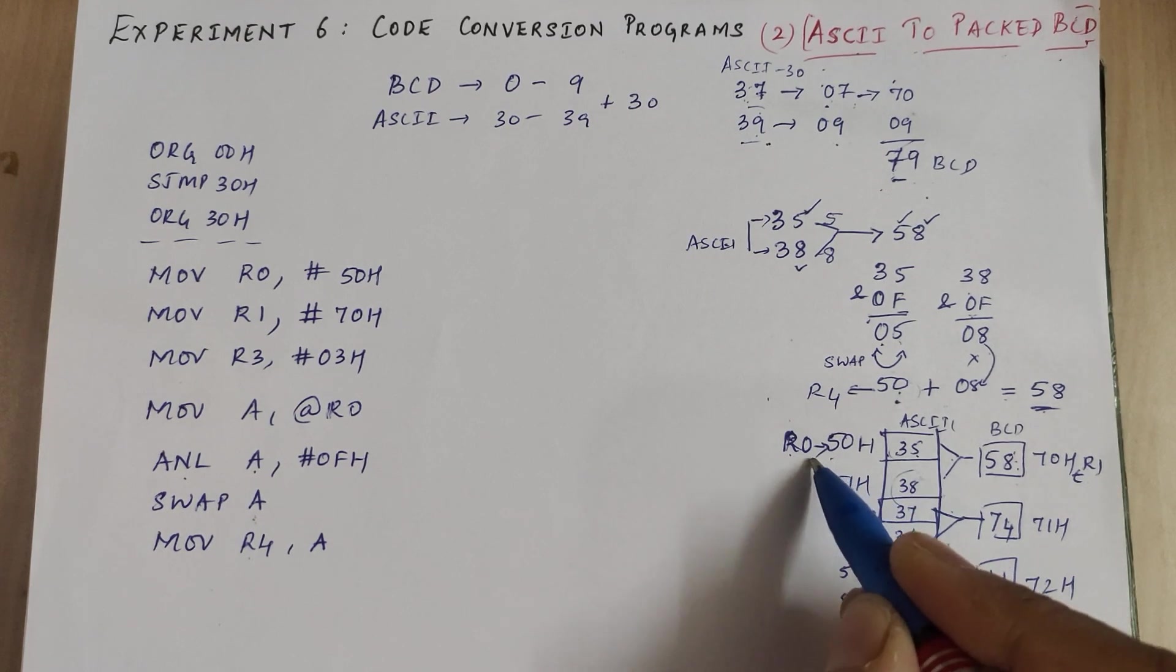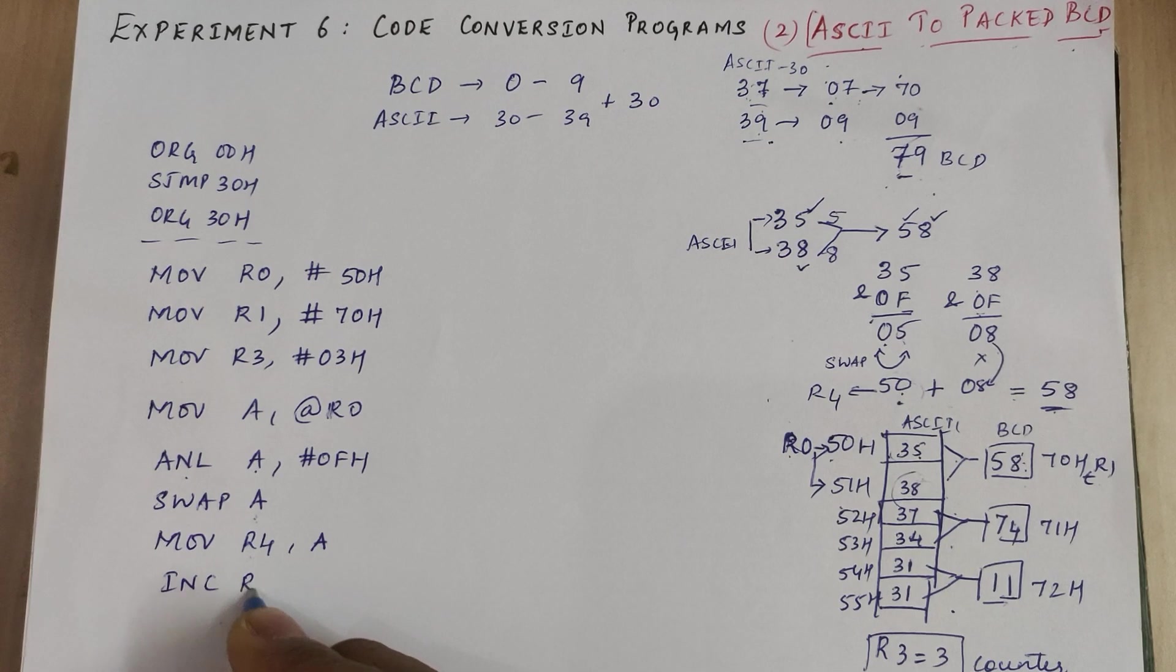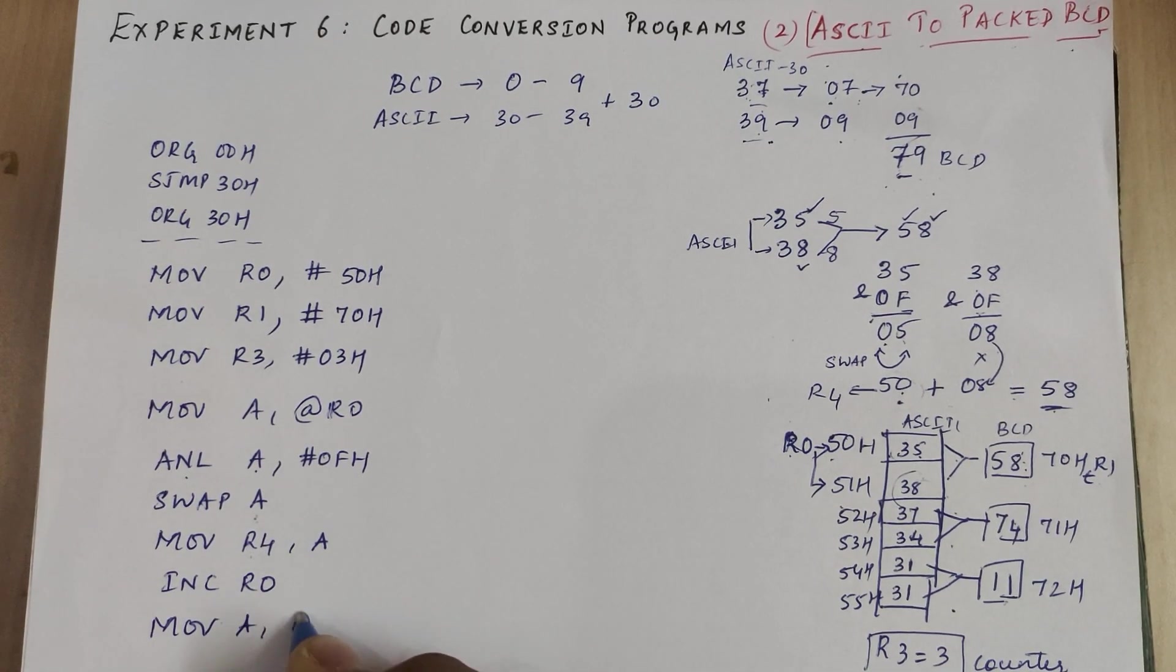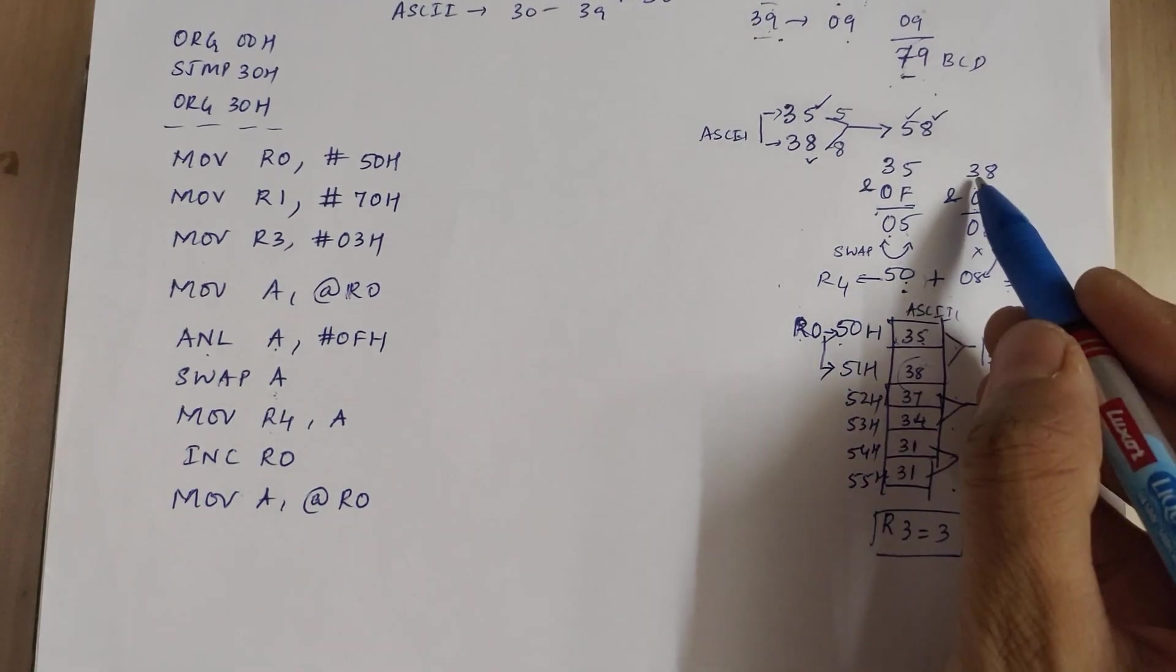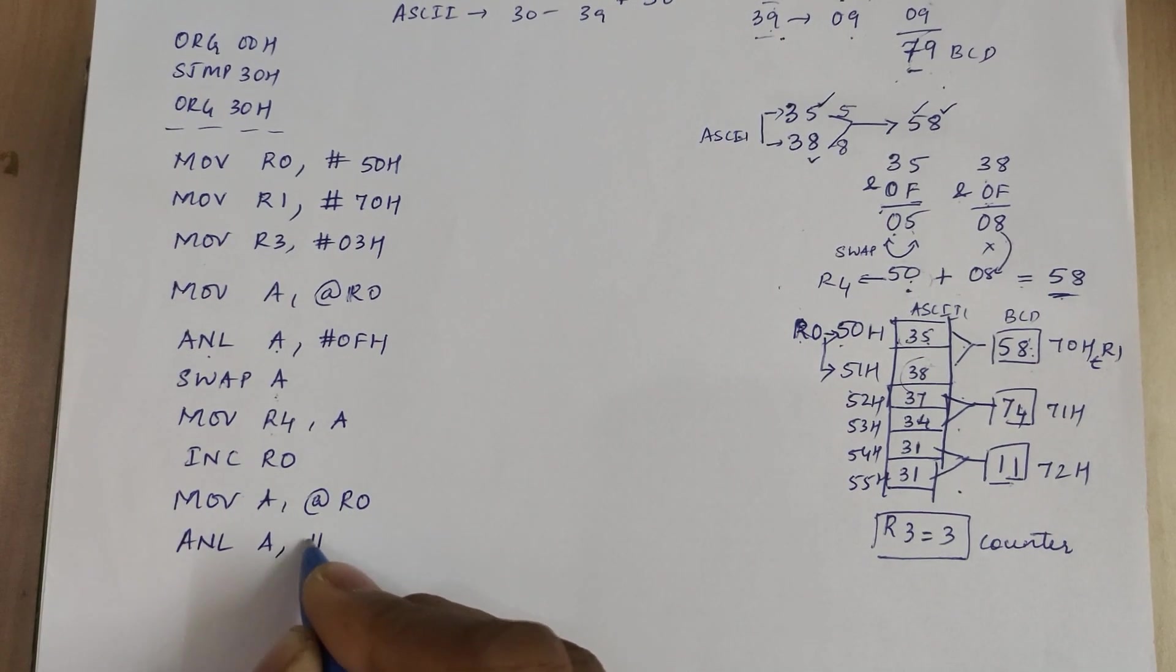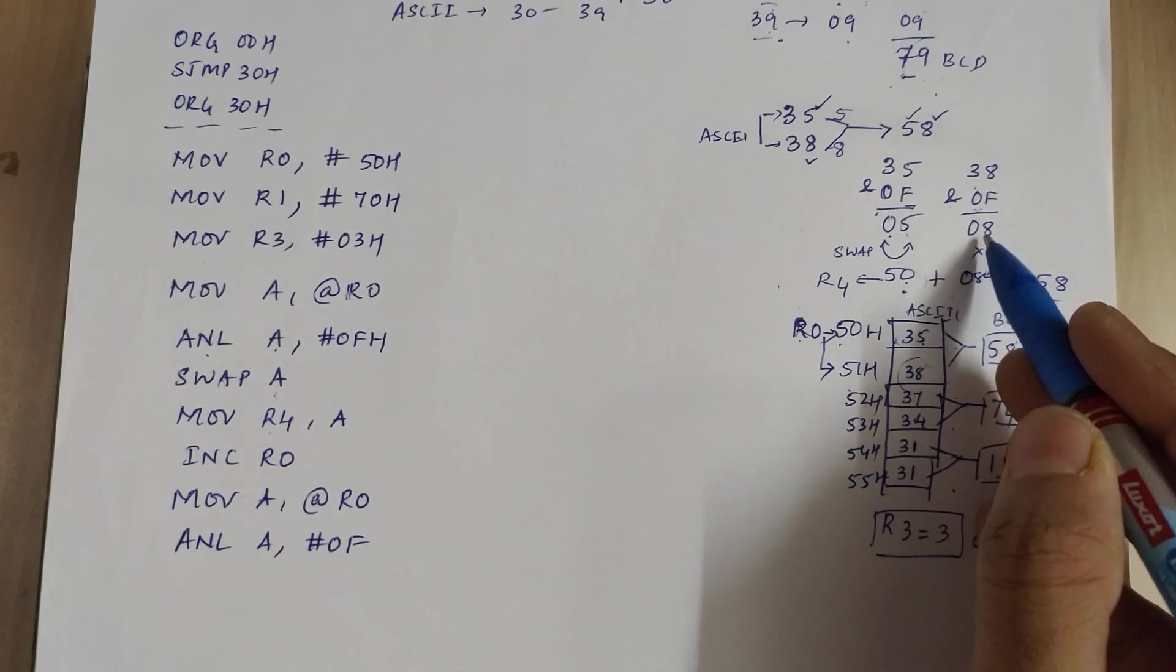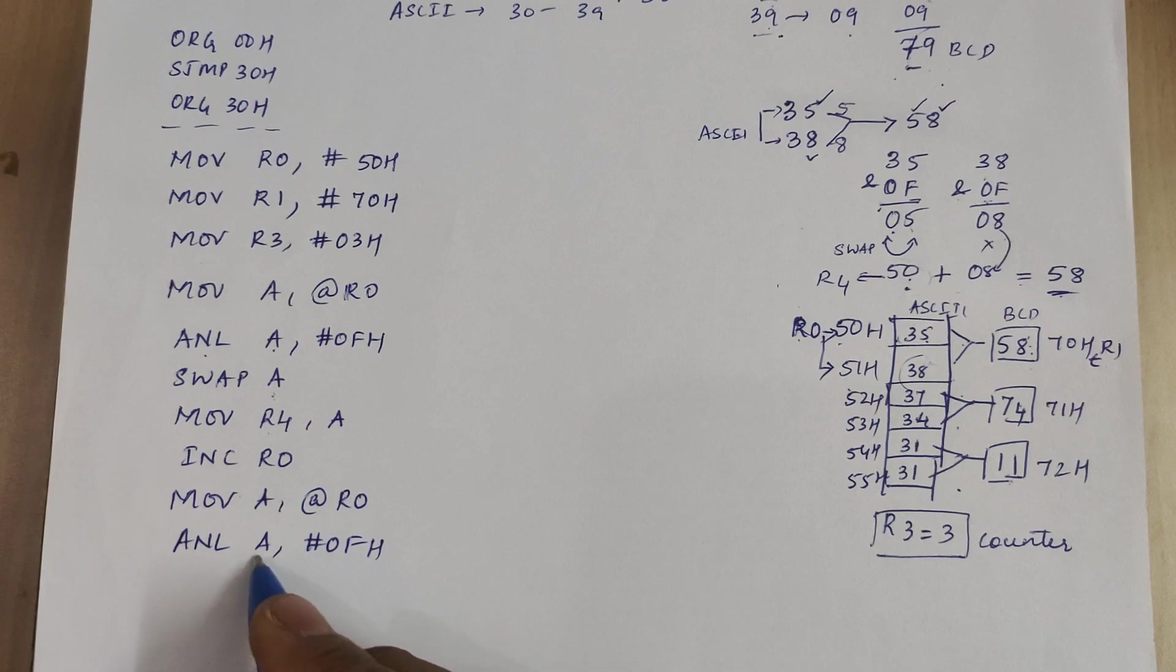Now we have to repeat the procedure. We have to take 38. So R0 has to increment. Increment R0, take back the data: move A comma at the rate of R0. Then after you have taken the data, that is 38, we have to AND it with 0F. AND logical A comma hash 0F. So we will get 8.